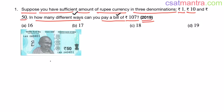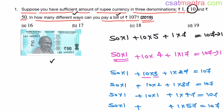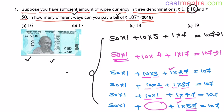Here we fix the number of 50-rupee notes and look at all possibilities. The next case: one 50-rupee note. Using maximum 10-rupee notes — that's 5 tens (50), plus 50 = 100, plus 7 one-rupee coins = 107. That's one way. Using 4 tens: we need 17 one-rupee coins. Using 3 tens: 27 one-rupee coins. Using 2 tens: 37 one-rupee coins. Using 1 ten: 47 one-rupee coins. Using no tens: 57 one-rupee coins. So with one 50-rupee note, you can pay the bill in 6 ways.